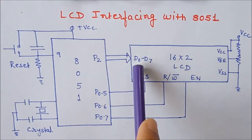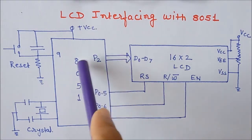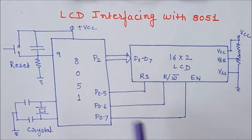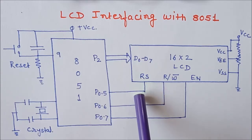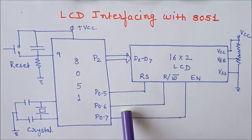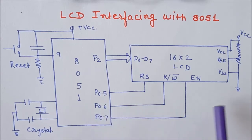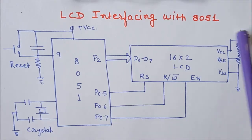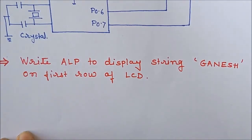The data bus D0 to D7 is connected to port P2 of the 8051. We can use any port to connect these pins. The RS terminal, which is the register select terminal used to select command or data register, is connected to pin P0.5. The read/write terminal of the LCD is connected to P0.6 and the enable terminal is connected to P0.7.